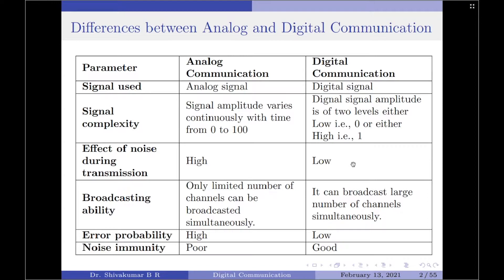The next parameter is the broadcasting ability. In analog communication, only a very limited number of channels can be broadcasted simultaneously, whereas in digital communication a large number of channels can be simultaneously broadcasted. The next parameter is the error probability. The error probability in analog communication is considerably high, whereas that in digital communication is quite low.